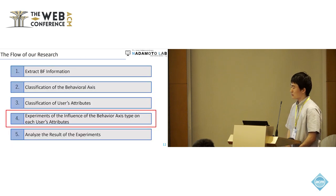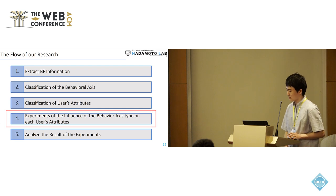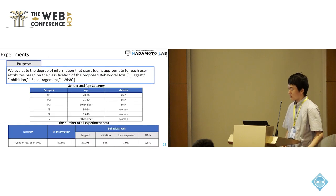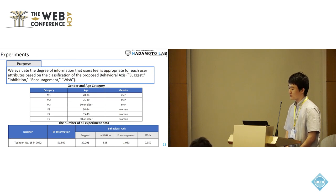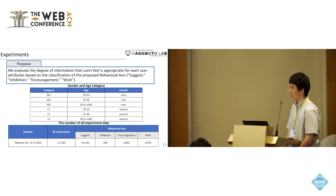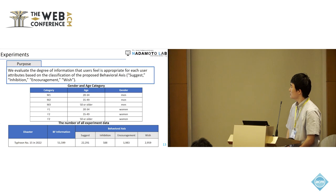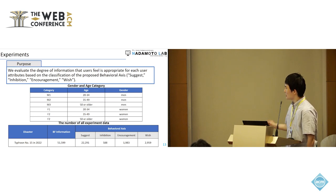Next, we conduct an experiment. The purpose of our experiment is to evaluate the degree to which users feel information is appropriate, for each user attribute, based on the classification of the BF behavior axis: suggestion label, inhibition label, encouragement label, and wish label. We use six categories considering gender and age, and the number of all experiment data is shown in the table.